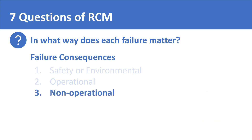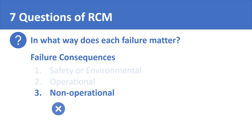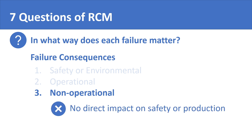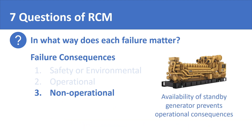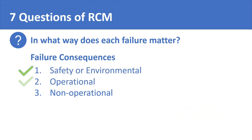Non-operational consequences are consequences that neither fall under safety and environment nor under operational consequences. They don't directly impact the safety of the plant, the environment, or production. Non-operational consequences are consequences involving only the cost and effort needed in repairing the system. For example, failure of a genset whose standby is available does not halt production, because the standby genset will take over the load. Therefore, no hindrance in operations will be experienced. So the fifth step in RCM is to work out all the different types of failure consequences you could face in your plant.